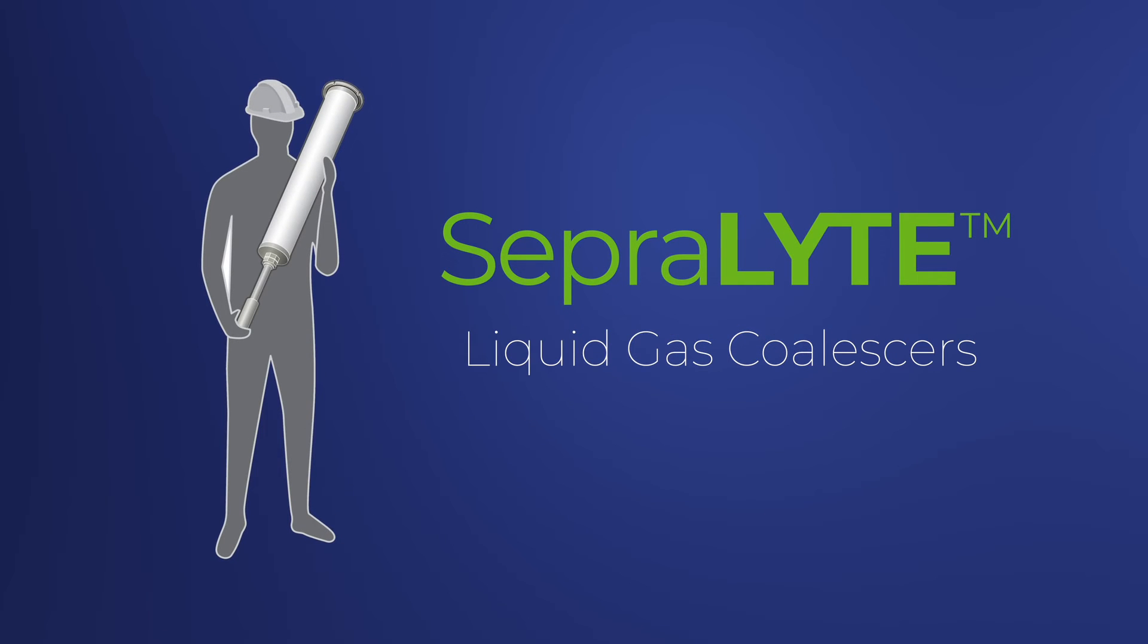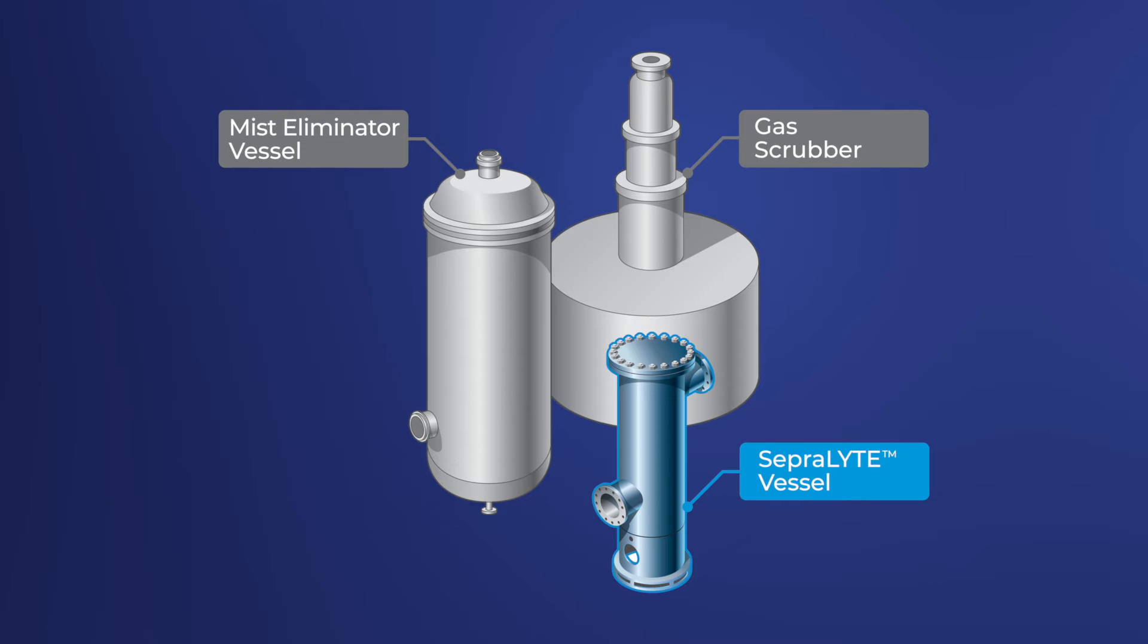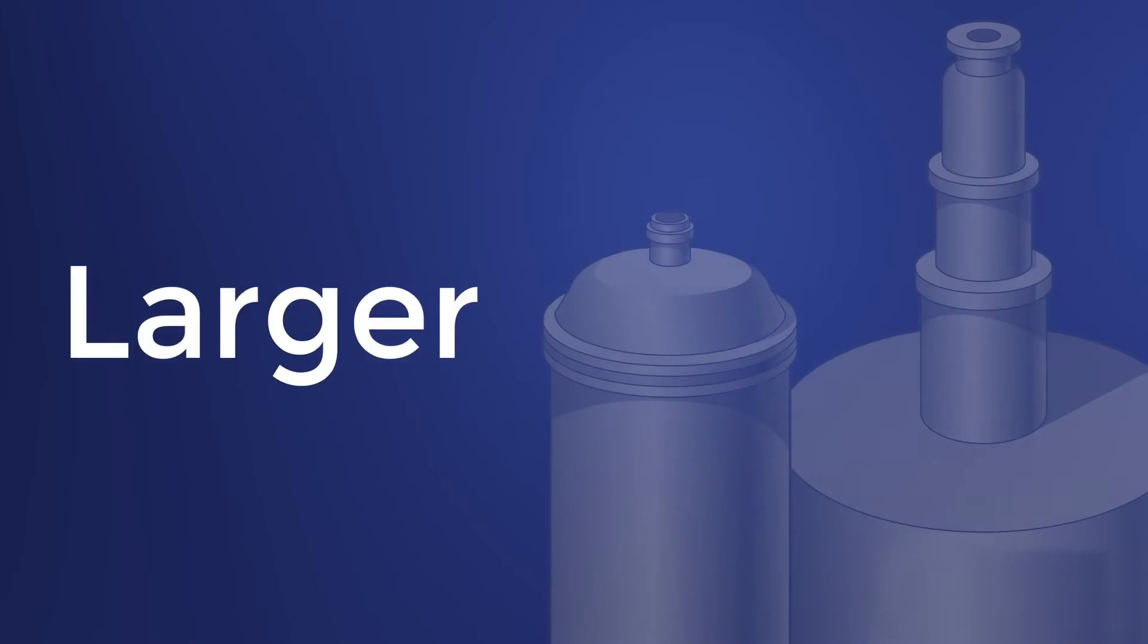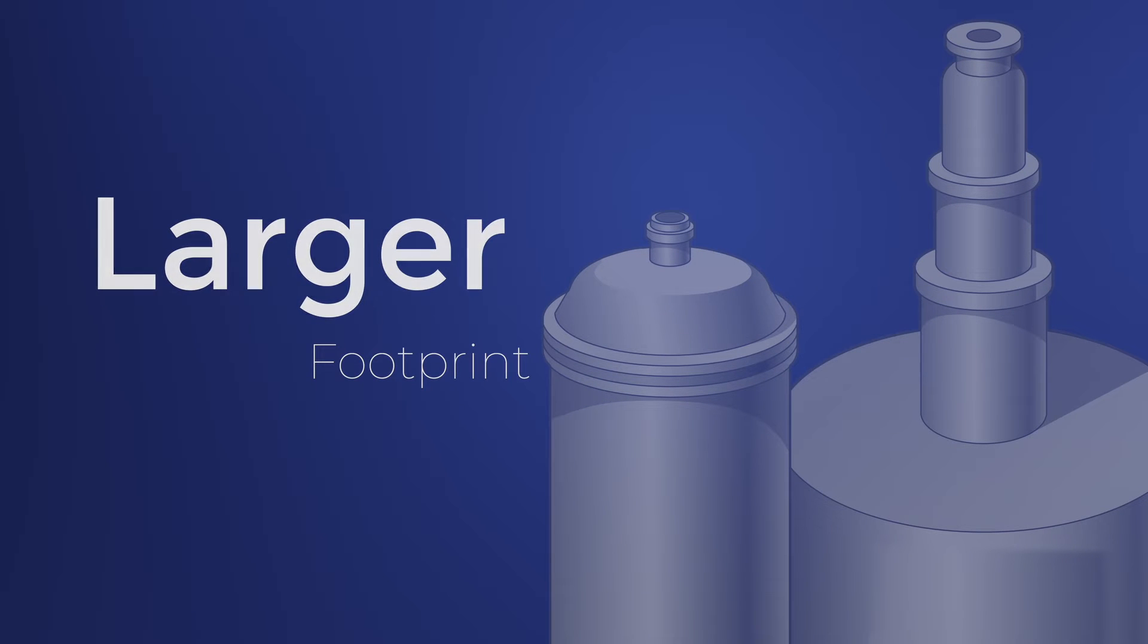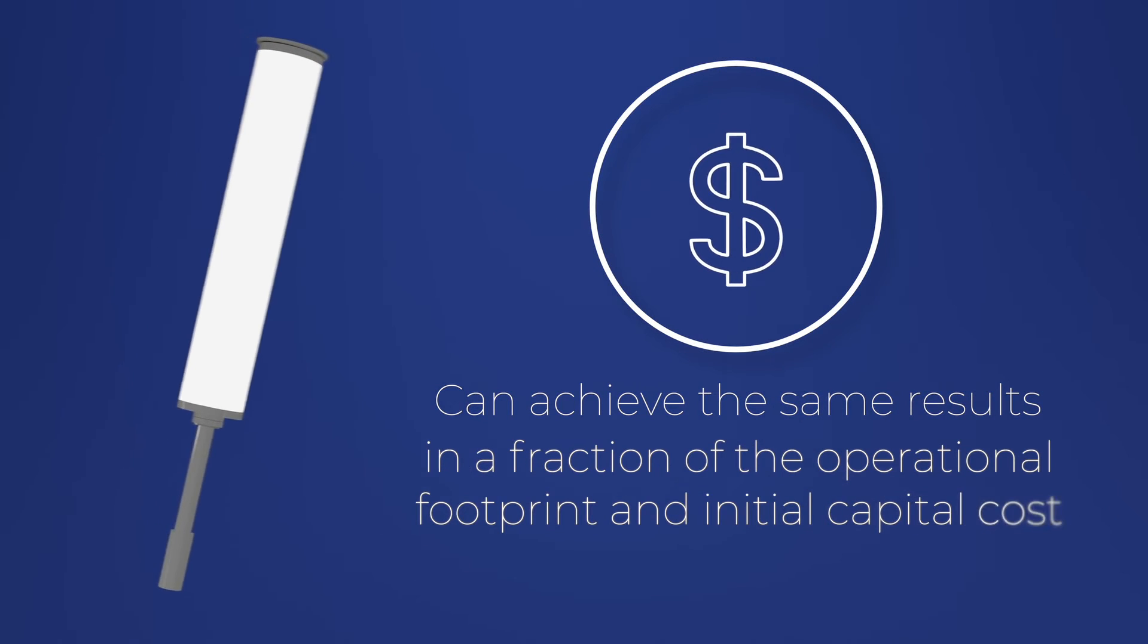Seprolite liquid gas coalescer's small, compact vessel size makes it perfect for scalability. Its footprint is much smaller than alternative separation methods, such as gas scrubbers and mist eliminators, which require a larger footprint to maintain low pressure differentials. Seprolite liquid gas coalescers can achieve the same results in a fraction of the operational footprint and initial capital cost.